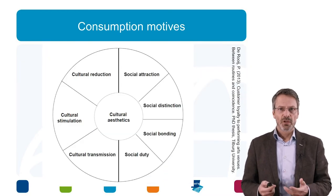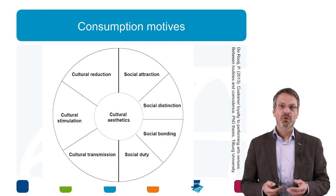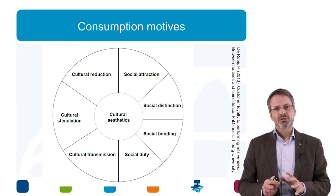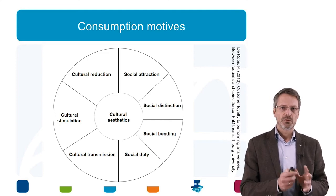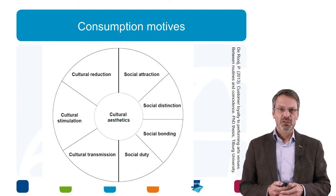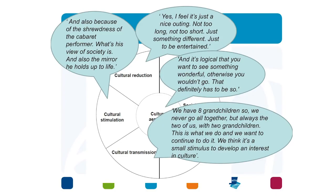Another insight from my PhD study is these consumption motives — a model developed after talking to 50 customers. There is a division between cultural-centred motives and social motives. Cultural aesthetics is the heart — the main reason people attend theatre: it should be beautiful. There is recreation — it should be a nice outing, some entertainment. There is cultural stimulation — sometimes overrated by cultural organisations — but there is a group of people who do want to learn something.